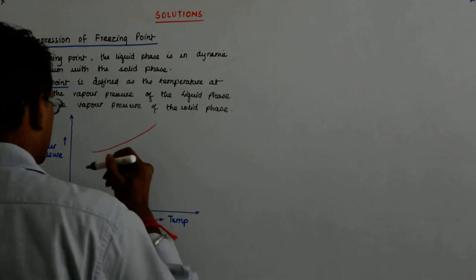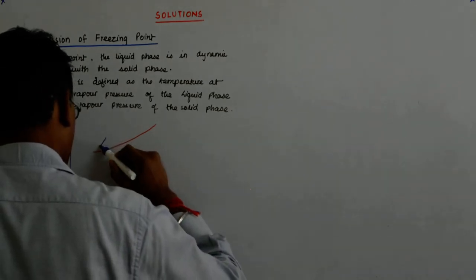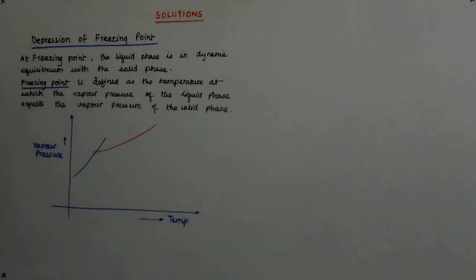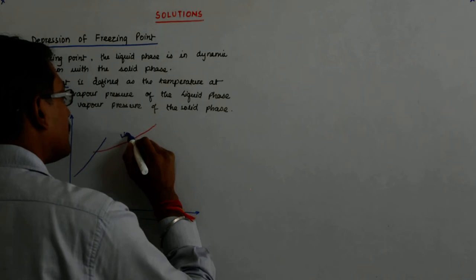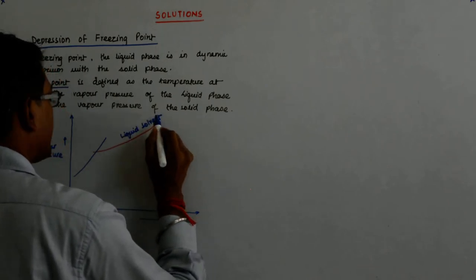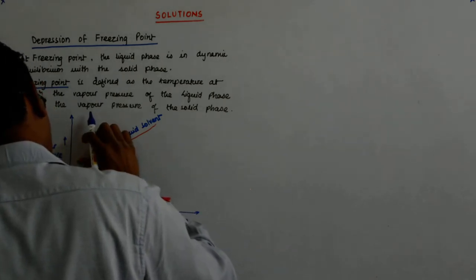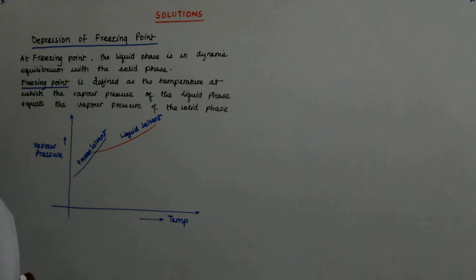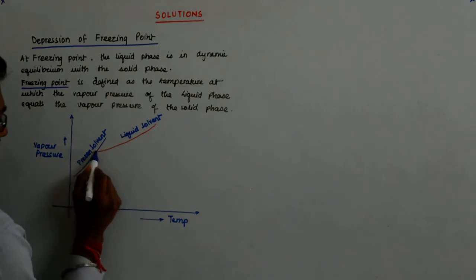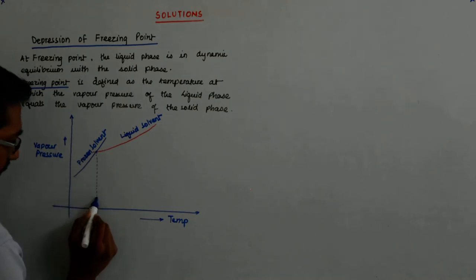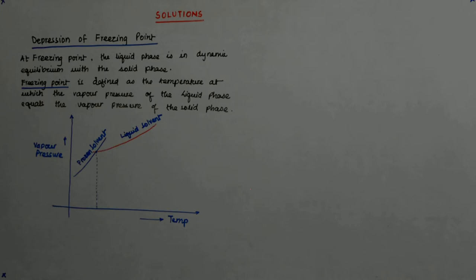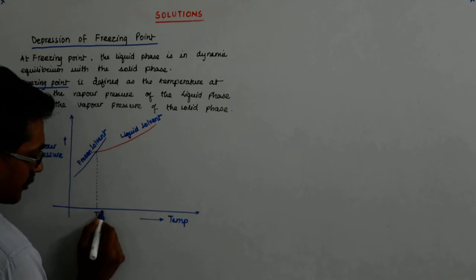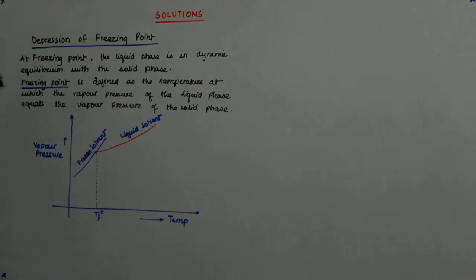So this is my liquid solvent, solvent in the liquid state. This is my frozen solvent. And this is the point where they intersect. So, this must be my original freezing point and I decide to denote it by Tf0.